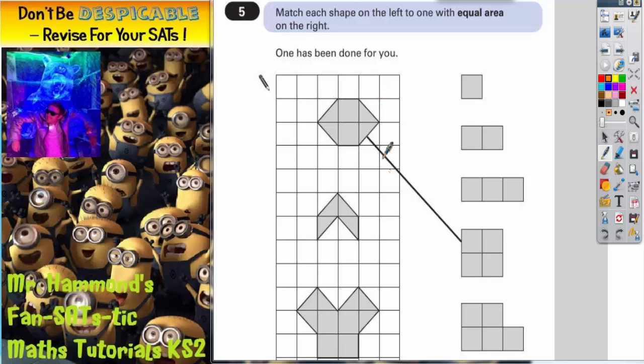Well, before we do anything, let's think about what the areas of each shape actually are. The shapes on the right are easy because they are made up of complete squares.